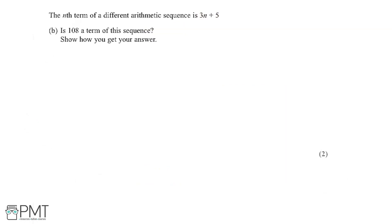Now looking at the next part here, we see that the nth term of a different arithmetic sequence is 3n plus 5. In part B, it says, is 108 a term in the sequence? And we need to show how we get this answer. So essentially, we need to answer this question: is 108 a term or not?